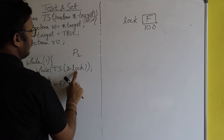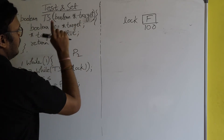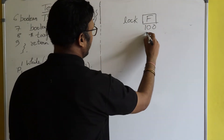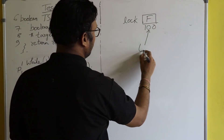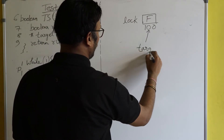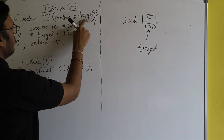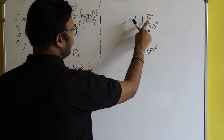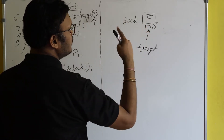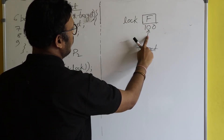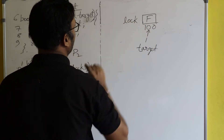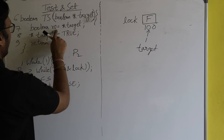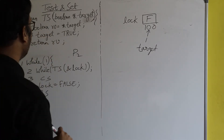The address of the lock variable is sent, so target is pointing to the lock variable. Target is a pointer (note the star), pointing to the boolean value which is currently false.